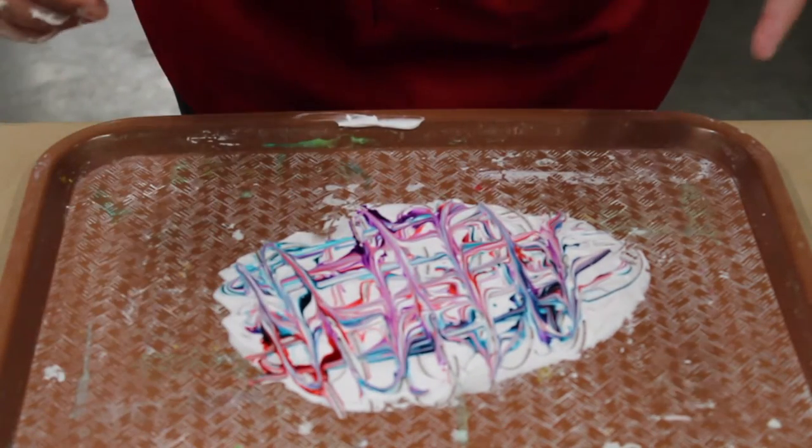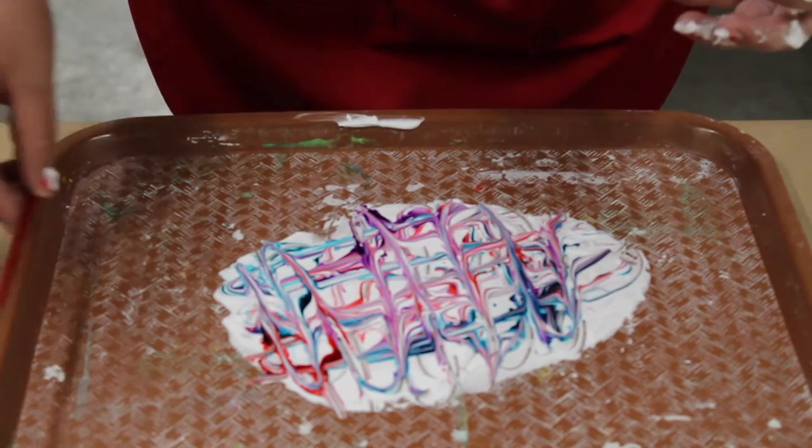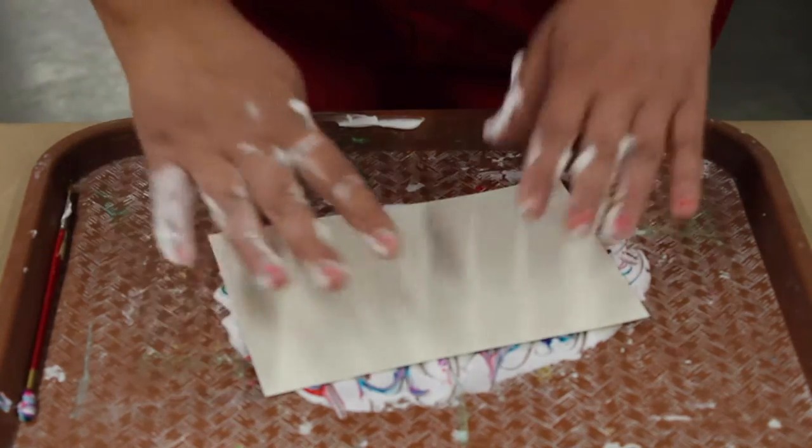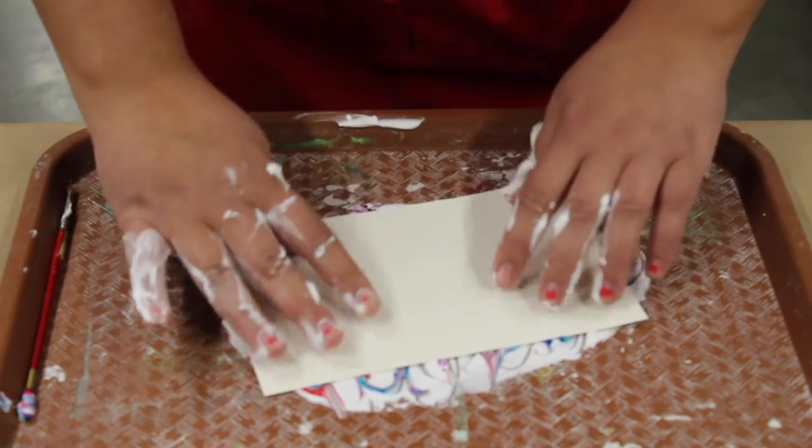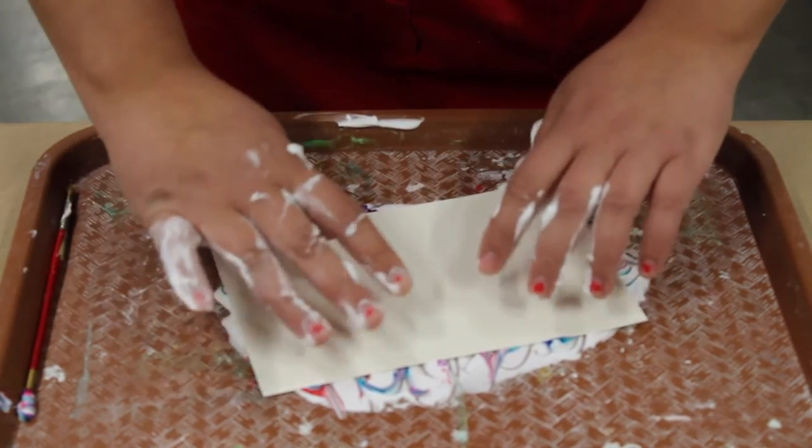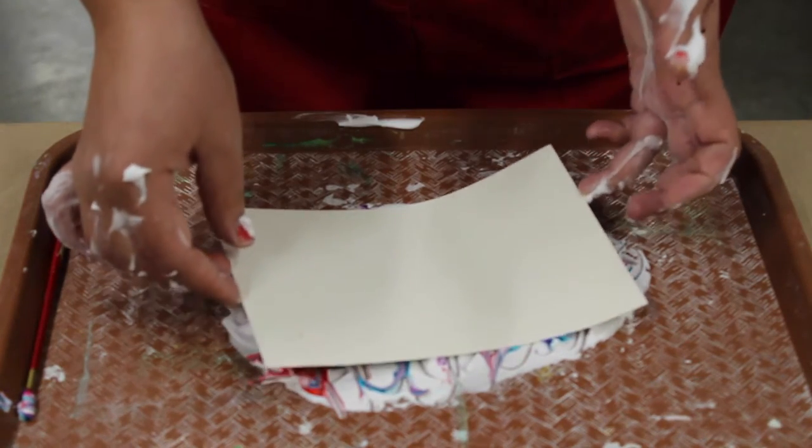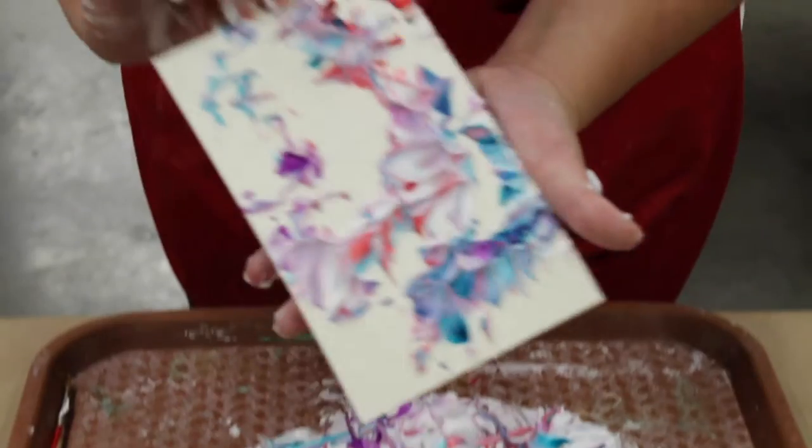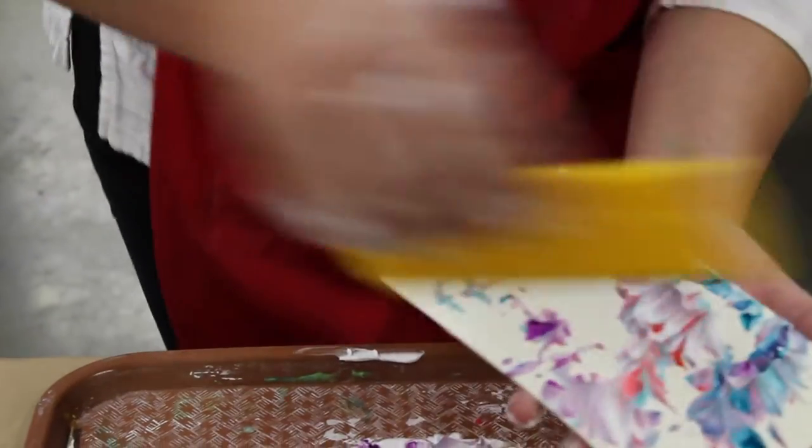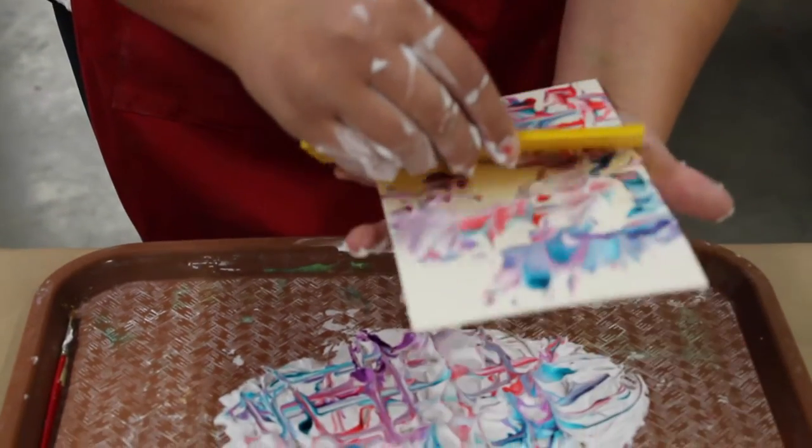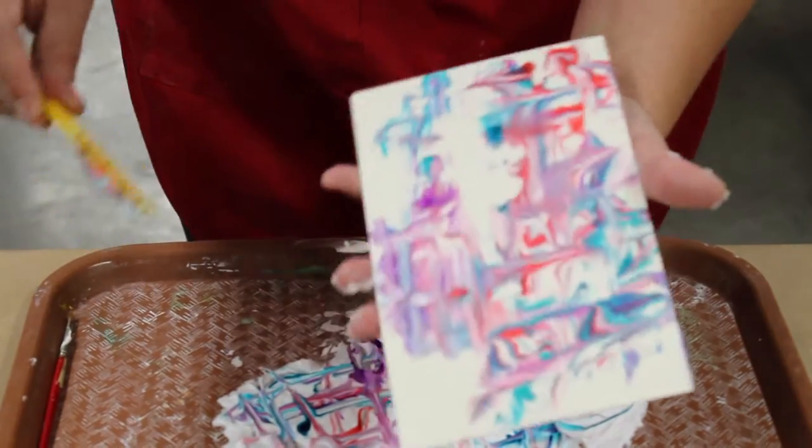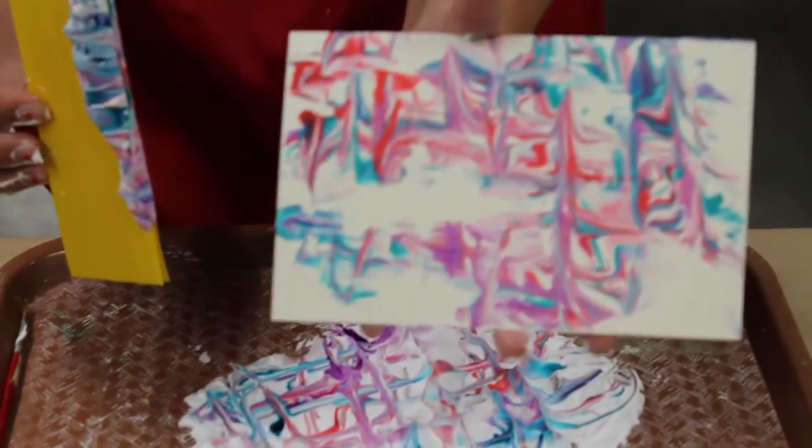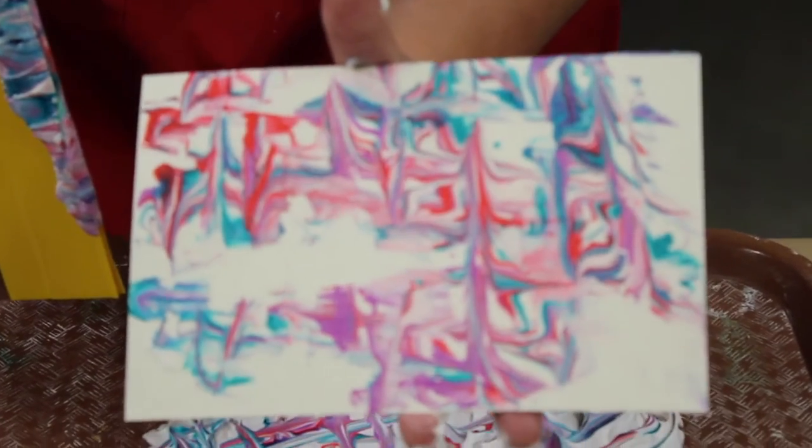Once you feel like you like the picture that you have, you can go ahead and take a piece of paper and place that down, lightly pat it. And then pick that up as easily as you can. This is what it's going to look like. We'll take our scraper and scrape the excess off. Look at what a cool picture that makes. Look at that pretty marbling it does.